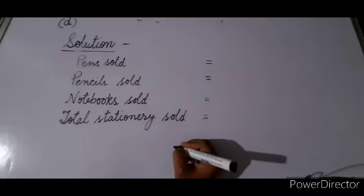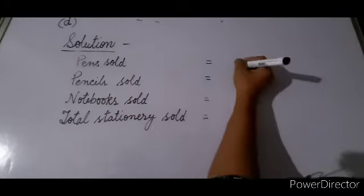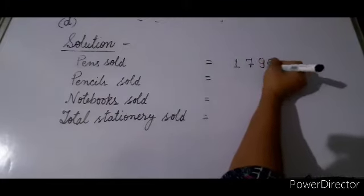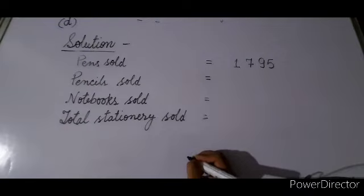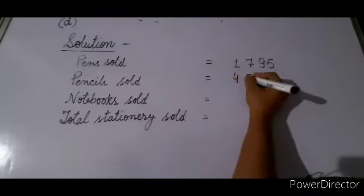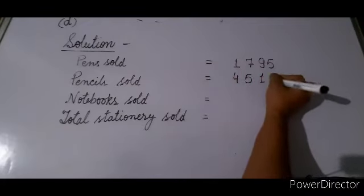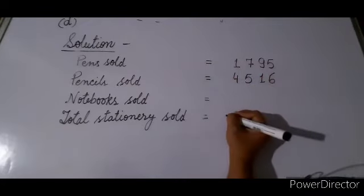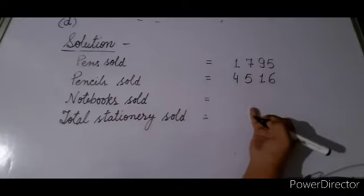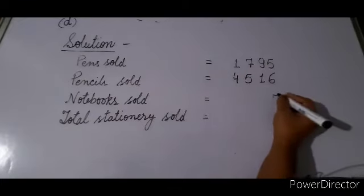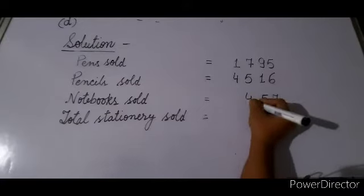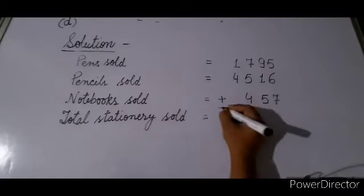Pens sold: 1795 — write 1795. Pencils sold: 4516 — write 4516. Notebooks sold: 457. Write from the right side: 7, 5, and 4 — aligning under the hundreds column. Then plus sign. Now add.